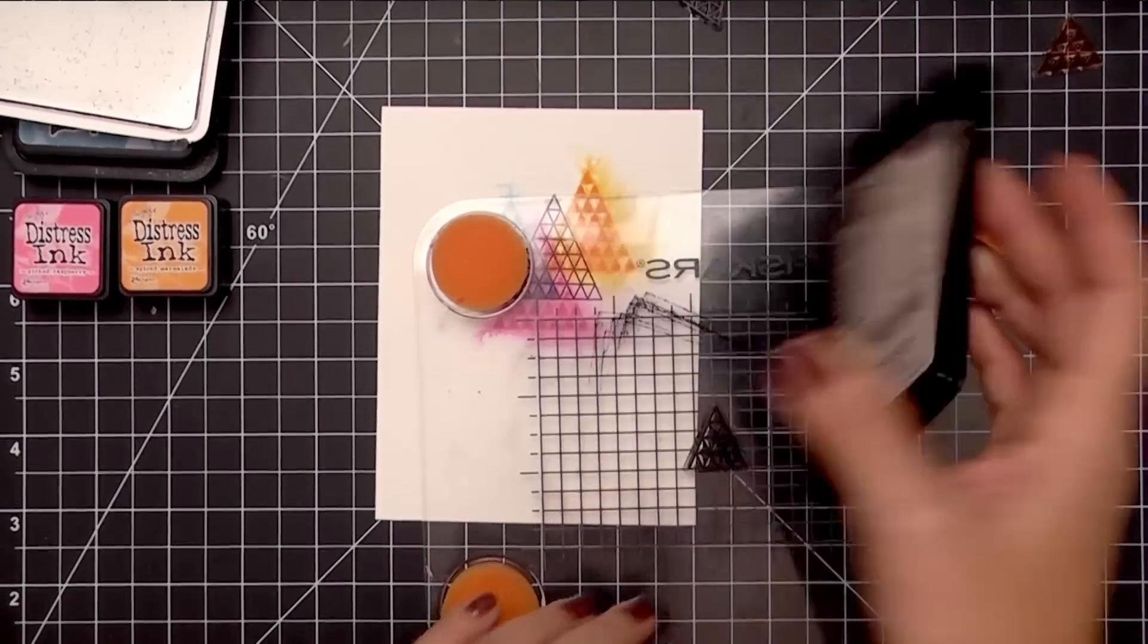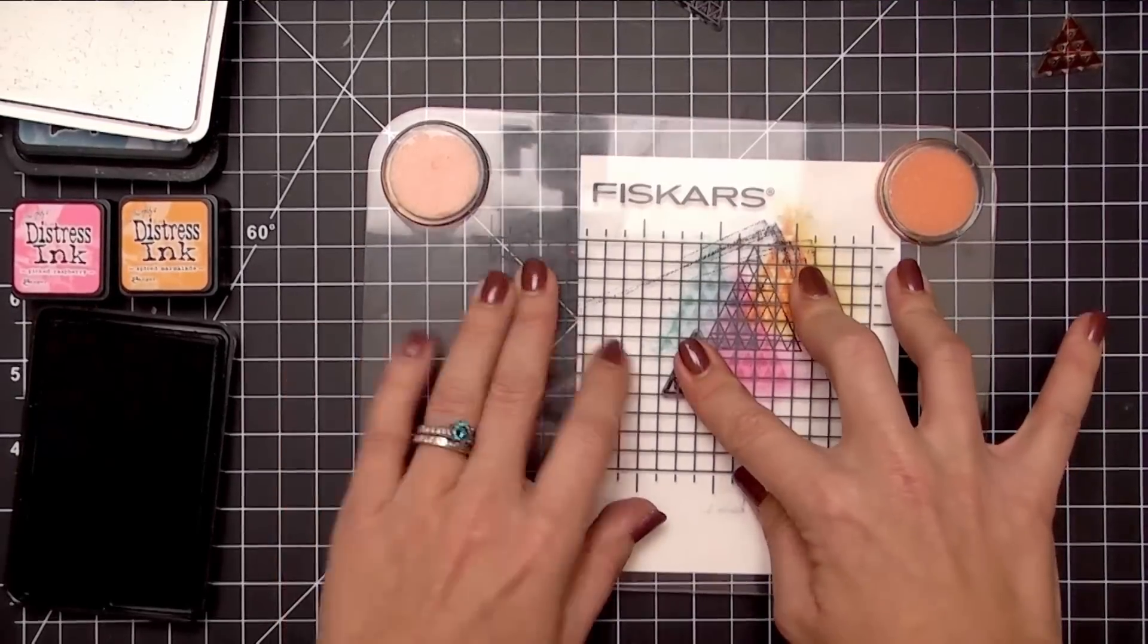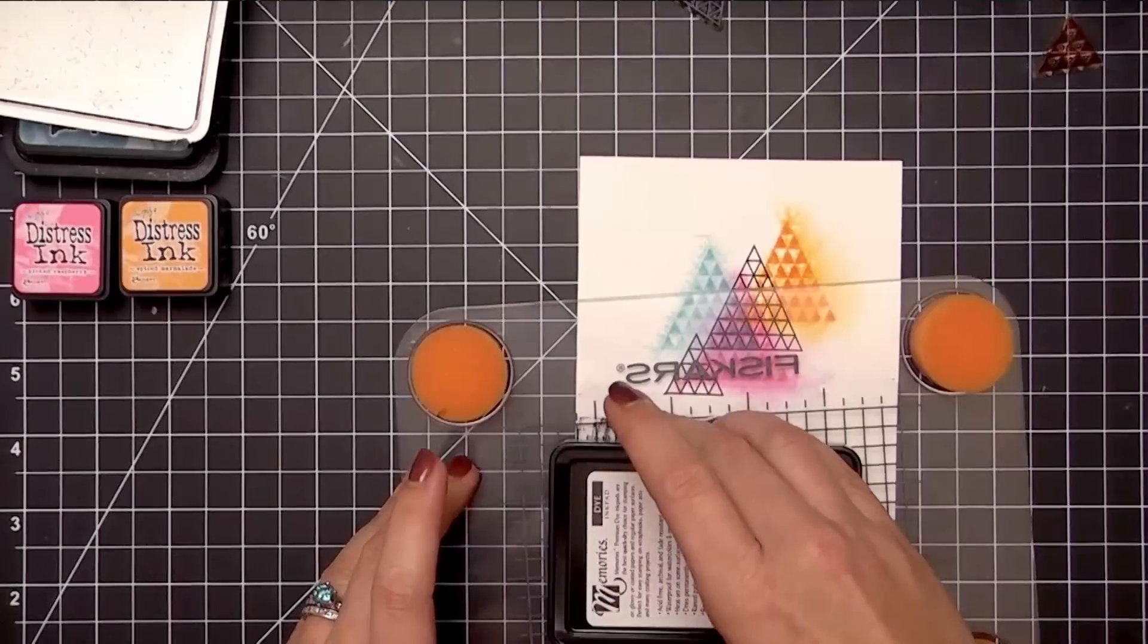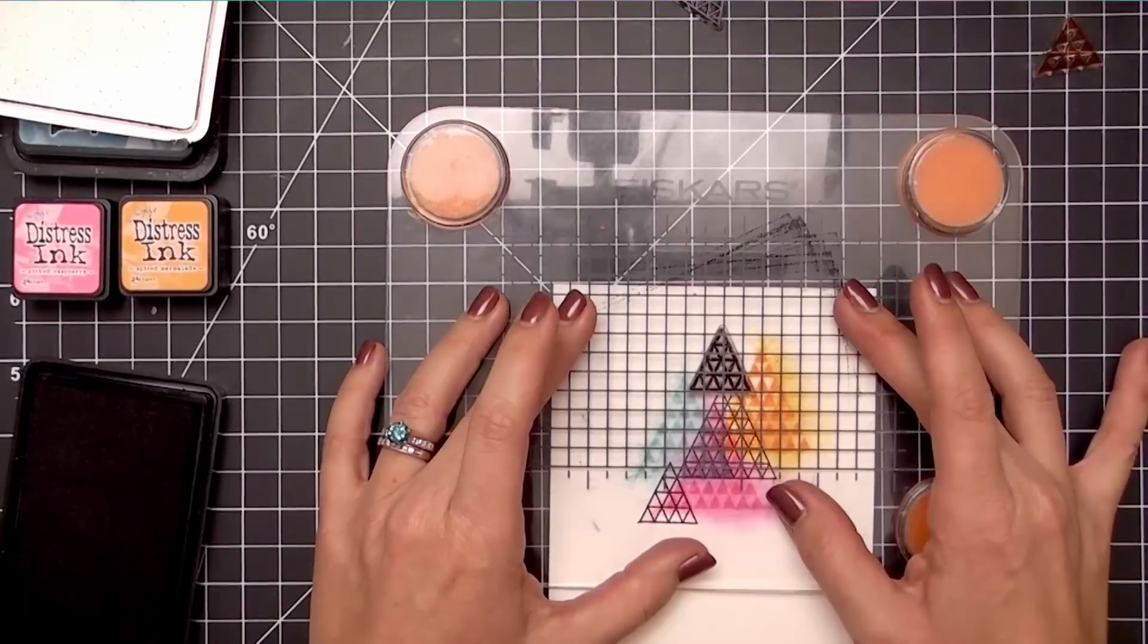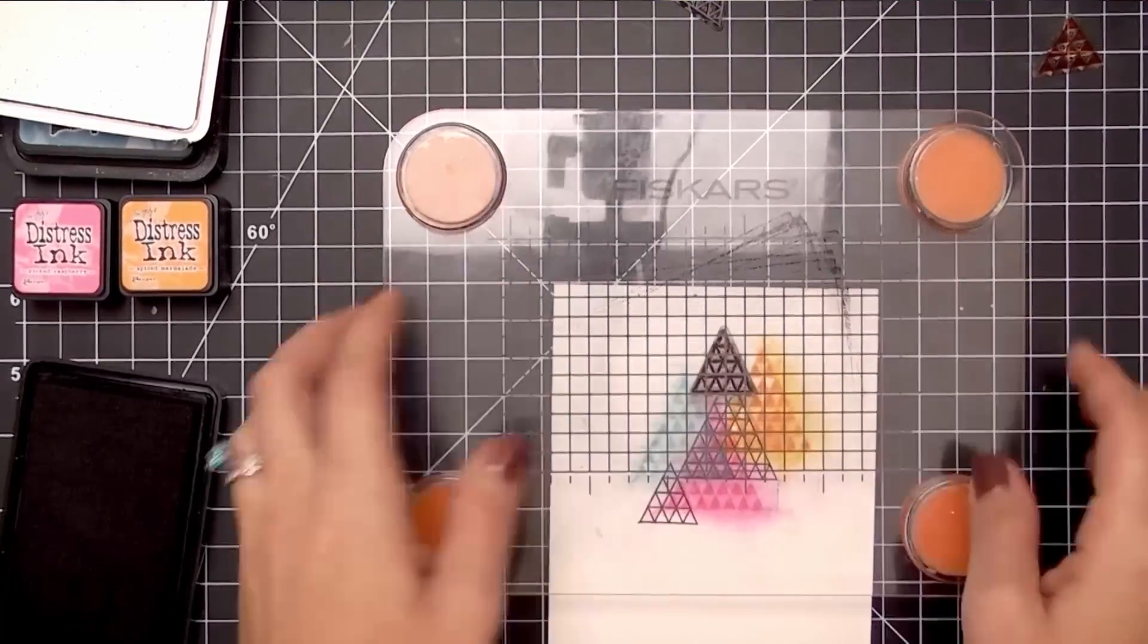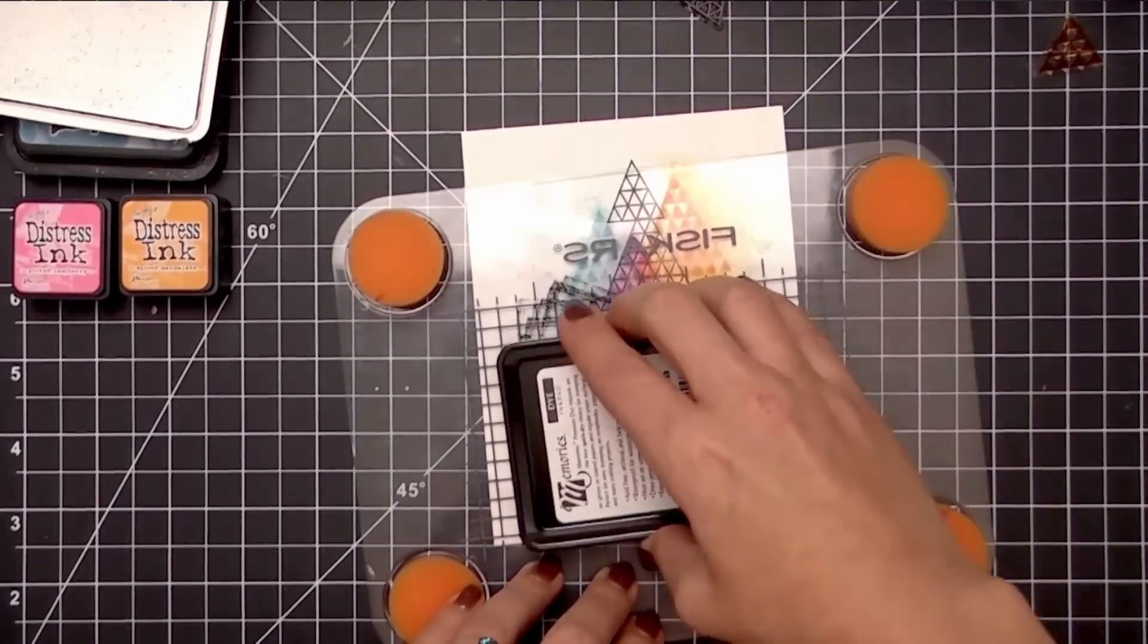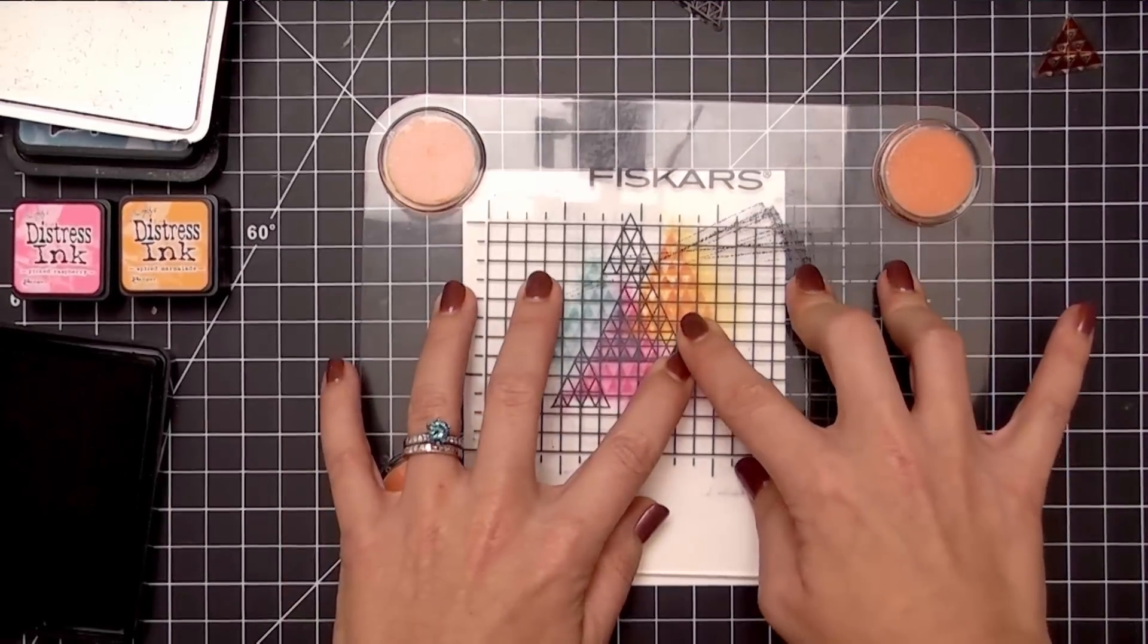Then I'm going to accent it with the medium-sized triangle that's also included in the set. I think this is going to add some interest by breaking it up a little. I could have done a large triangle for each one, but I wanted to stagger it and add just a little bit of interest.